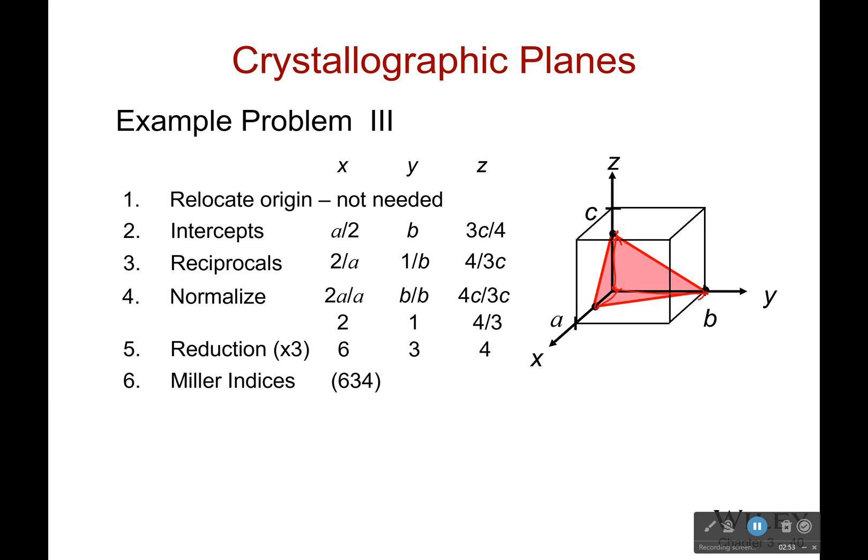So my Miller indices would be six, three, four in this particular case. Okay. And then I am done with that. That's it. Just don't forget parentheses. That's important.